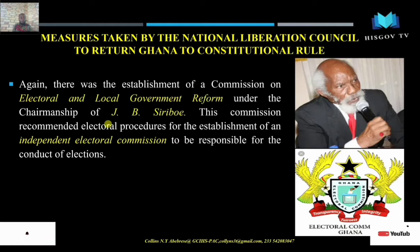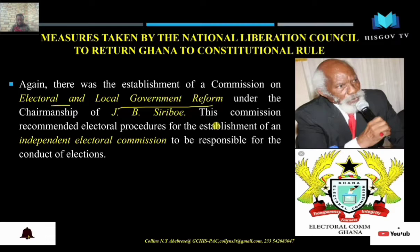The next measure was the establishment of a Commission on Electoral and Local Government Reform. Apart from the 16-member constitutional commission, another commission was established known as the Commission on Electoral and Local Government Reform. The chairman of this commission was J.B. Cerebral, and this commission recommended electoral procedures for the establishment of an independent Electoral Commission.